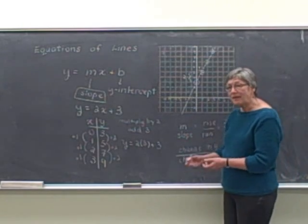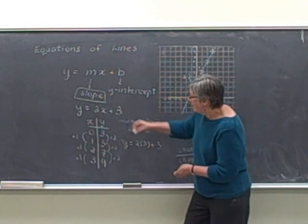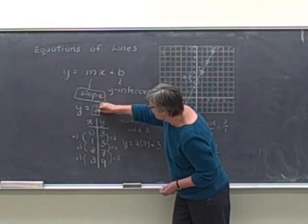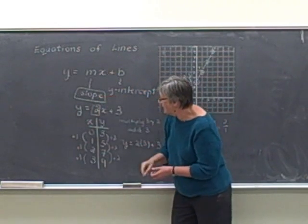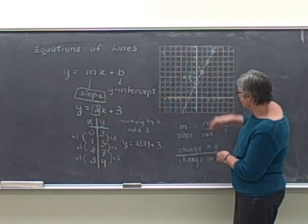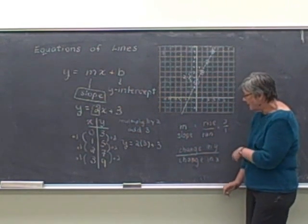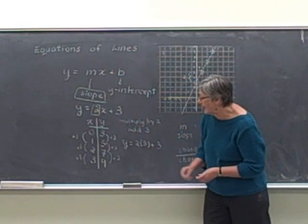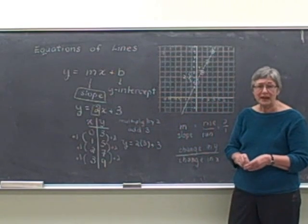And so again, we have the equation y equals 2x plus 3. The number here that we said indicated slope does indicate slope using our formula rise over run, 2 over 1, and also looking at our chart as the change in y's over the change in x's.